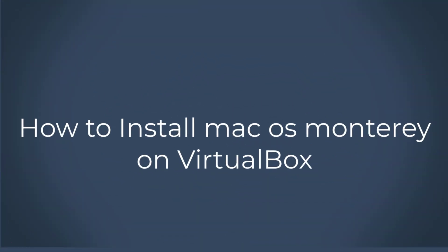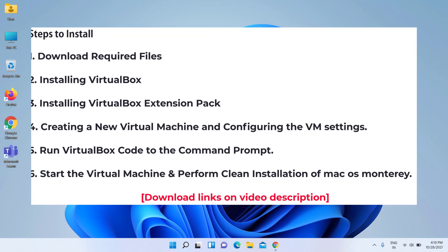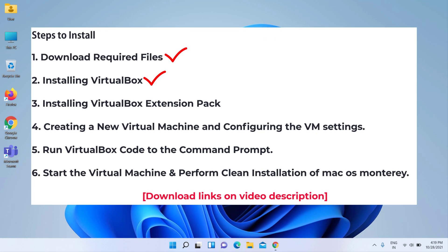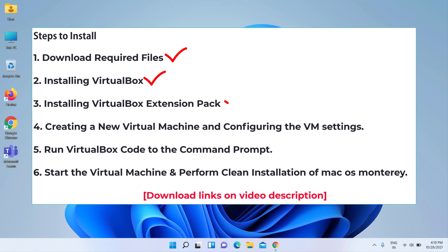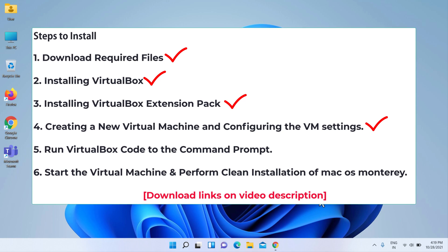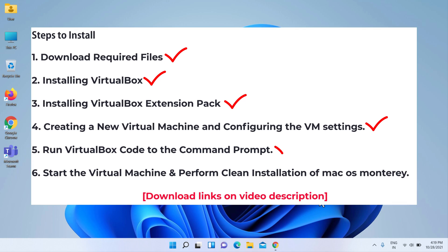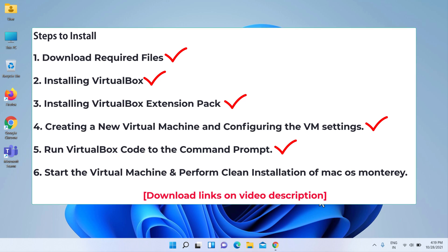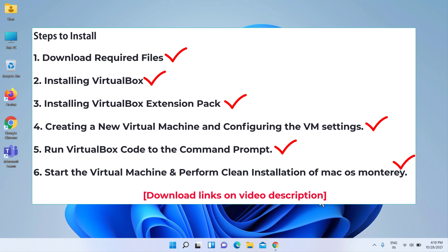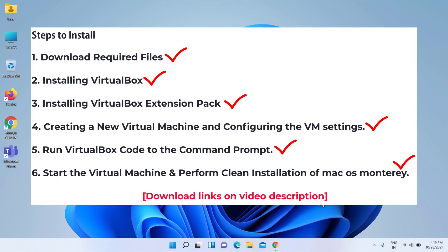How to install macOS Monterey on VirtualBox on Windows. Steps: 1. Download required files. 2. Installing VirtualBox. 3. Installing VirtualBox Extension Pack. 4. Creating a new virtual machine and configuring the VM settings. 5. Run VirtualBox code to the command prompt. 6. Start the virtual machine and perform a clean installation of macOS Monterey. Download links are in the video description.